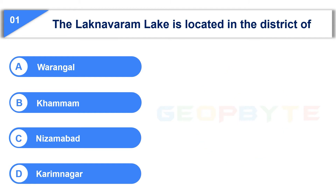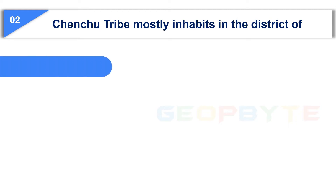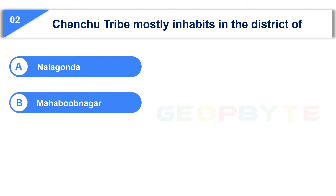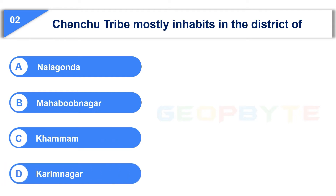Your time is up and the correct answer is Option A: Warangal. The second question is: Chenchu tribe mostly inhabits in the district of — Option A: Nalgonda, Option B: Mahbubnagar, Option C: Khammam, Option D: Karimnagar. Your time starts now.